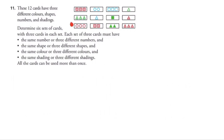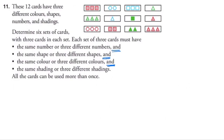In this next example, we are given 12 cards and now have four attributes: different colors, different shapes, different numbers of objects, and different shadings. We are asked to build six sets of three cards each, where each set has the same number or three different numbers, same shape or three different shapes, same color or three different colors, and same shading or three different shadings. Starting with colors, I can see four green cards, three of which are triangles — same color, same shape, three different numbers, and three different shadings. That fits all attributes.